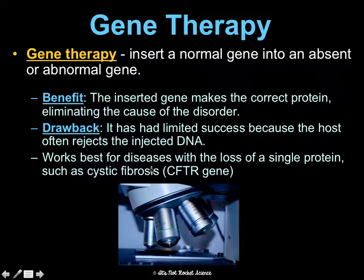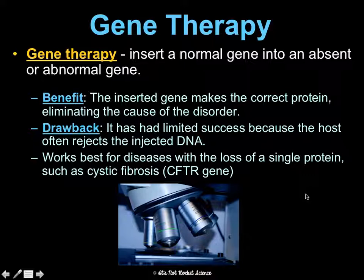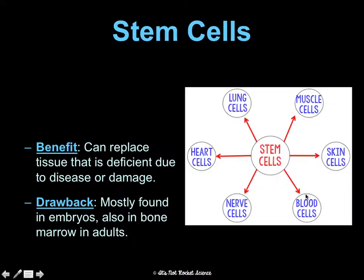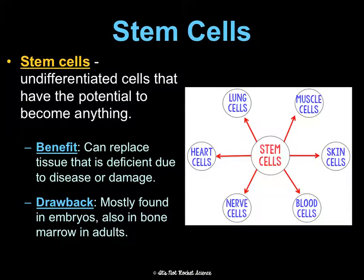In Cystic Fibrosis, that gene is the CFTR gene. If a disease is caused by multiple genes being messed up, gene therapy becomes more and more complicated. Stem cells — cells that have the potential to become anything — can replace tissue that's deficient due to disease or damage, but they're limited in availability because they're mainly found in embryos as well as adult bone marrow.